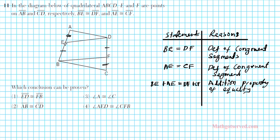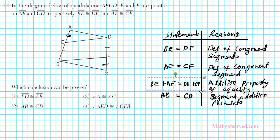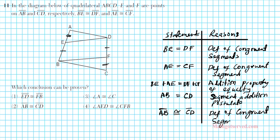BE and AE together form AB, so we have AB equals DF plus CF, which together form CD. The reason for that is the segment addition postulate. Then, using the definition of congruency, since the length of AB equals CD, segment AB is congruent to segment CD — by definition of congruent segments. That clearly shows the answer is option 2.